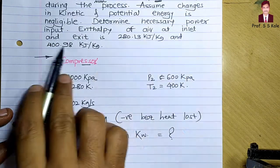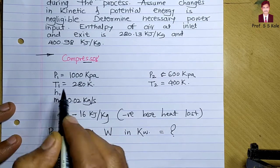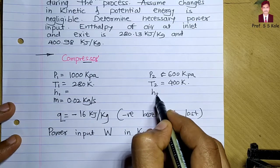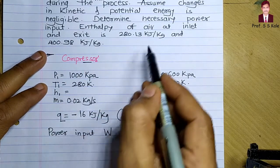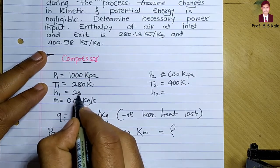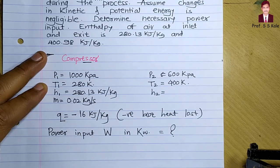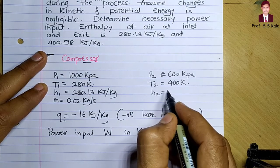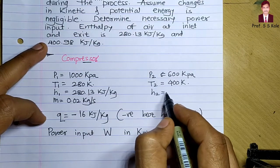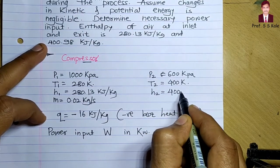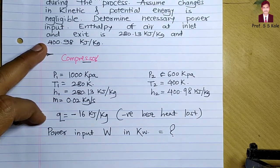Enthalpy at inlet is h1 and enthalpy at outlet is h2, written in small h because they are per kg. h1 is 280.13 kilojoule per kg and h2 is 400.98 kilojoule per kg — these are given in the problem.